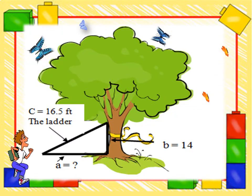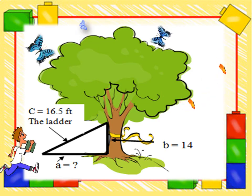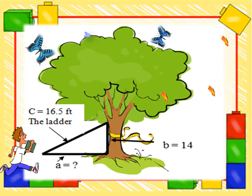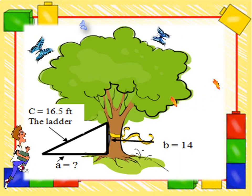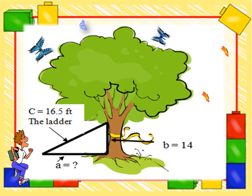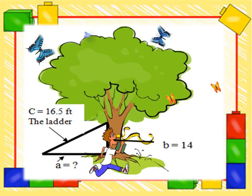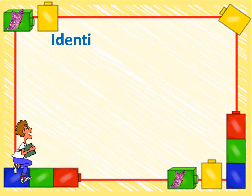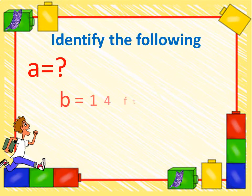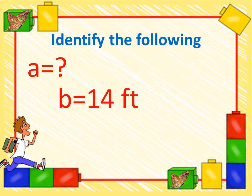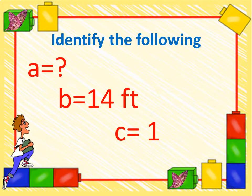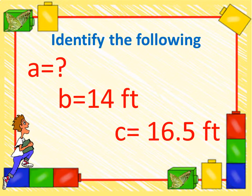Alright, let's find out what are the given. We have 16.5 feet and 14 feet. To understand the problem clearly, we have the tree and the ladder is 16.5 feet. The base of the tree to the top of the ladder is 14 feet. So, from the picture, we are going to find A. Let's identify the following: A is unknown, B is 14 feet, and C equals 16.5 feet.